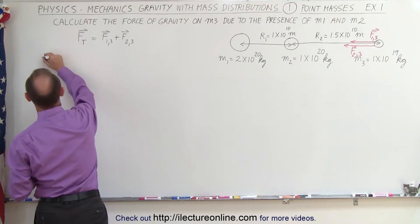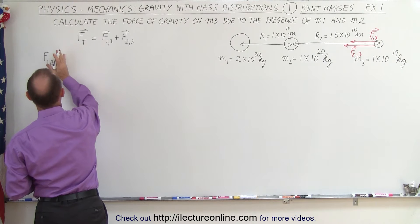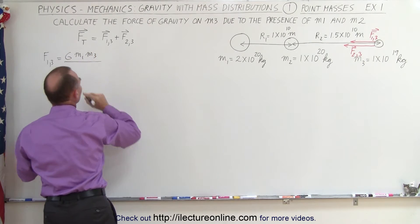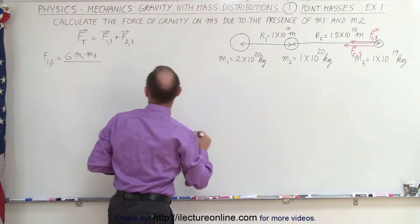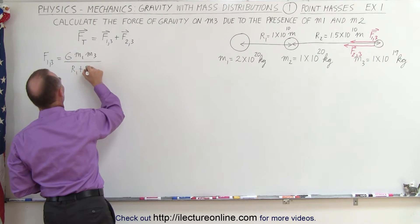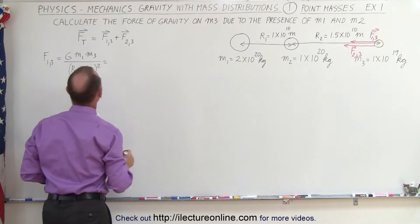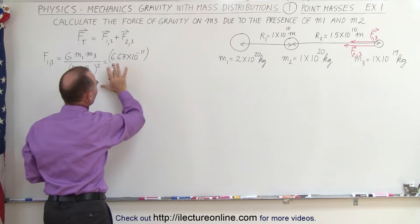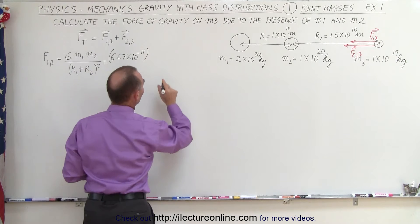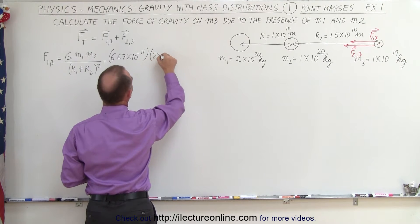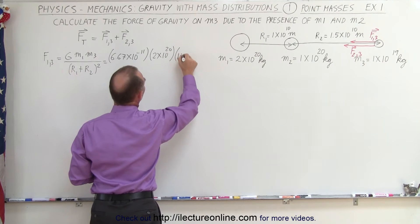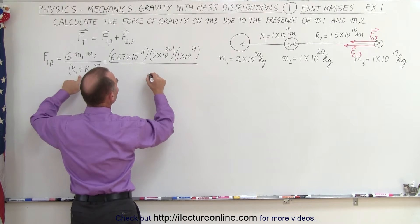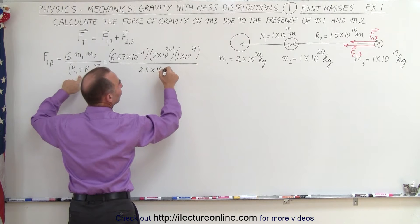So first we start with the force between one and three, and we just want the magnitude of that. So this is equal to G m1 m3 divided by the distance between them squared. That would be the sum of these minus two would be r1 plus r2 quantity squared. We plug in the numbers: we get 6.67 times 10 to the minus 11, and I'll leave out the unit so that's a little bit cleaner to work with. We have mass one, that would be 2 times 10 to the 20th, and mass 3 is 1 times 10 to the 19th, and we divide that by the sum of those two distances, that would be 2.5 times 10 to the 10th, and we have to square that.